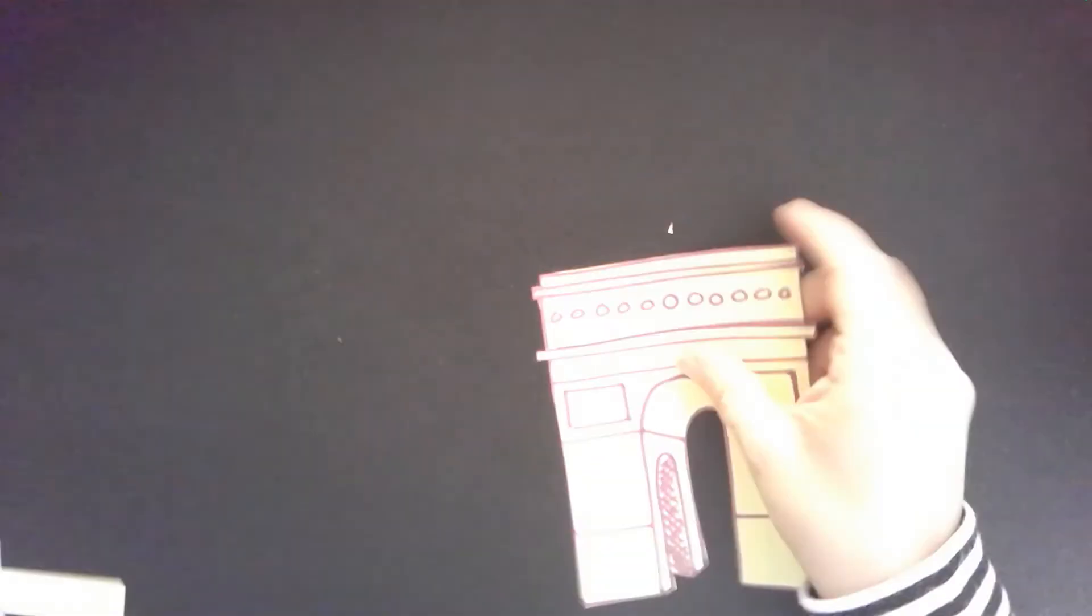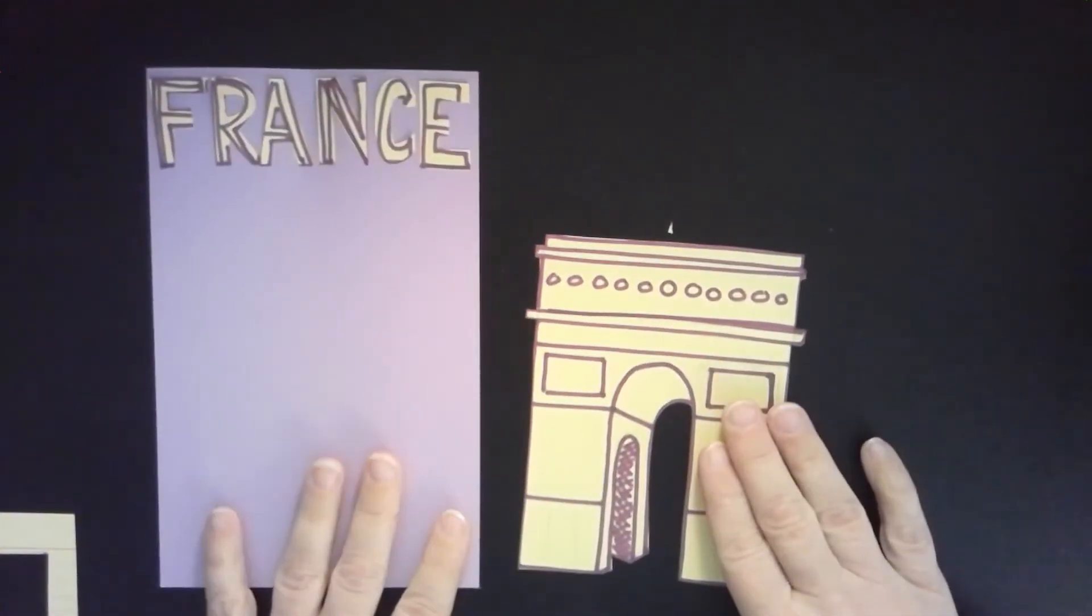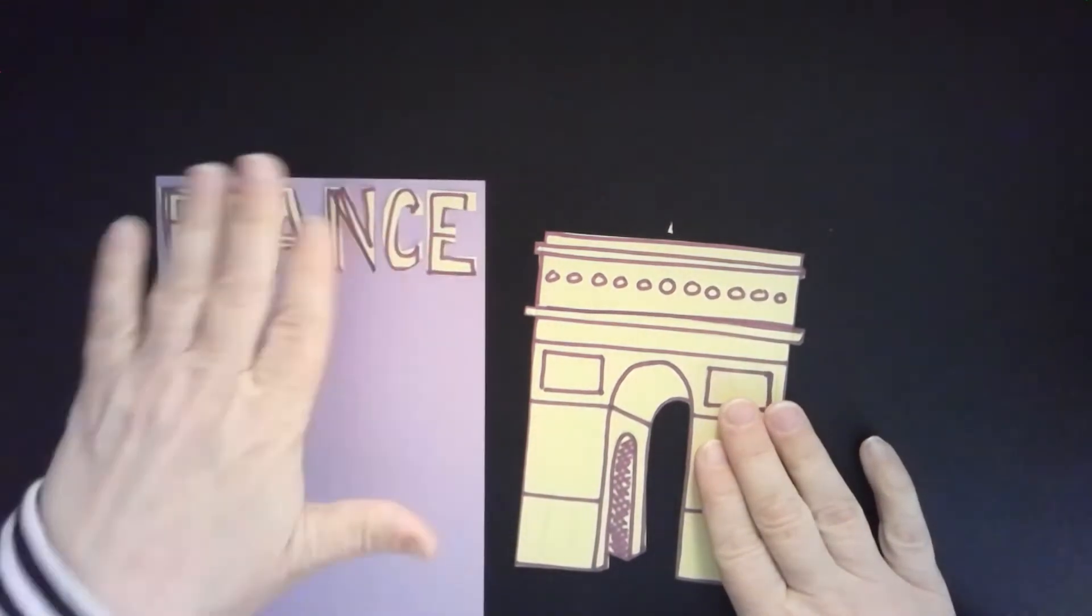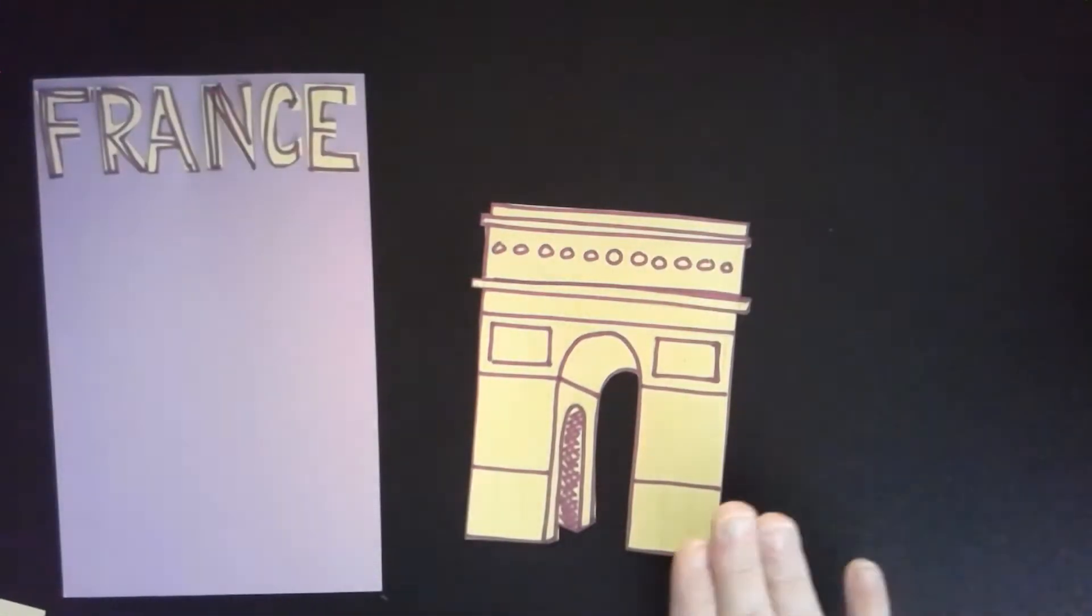So here's my base paper with my title on there of the country. Here is the Arc de Triomphe and I'm going to start. One of the first things that I am going to do is cut along my major lines that I have.